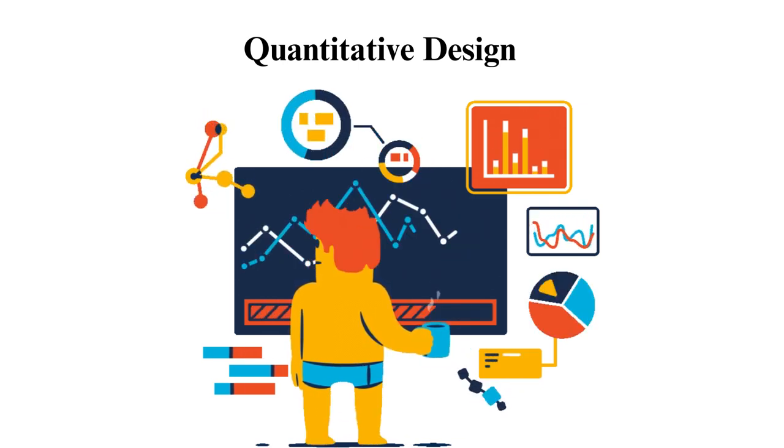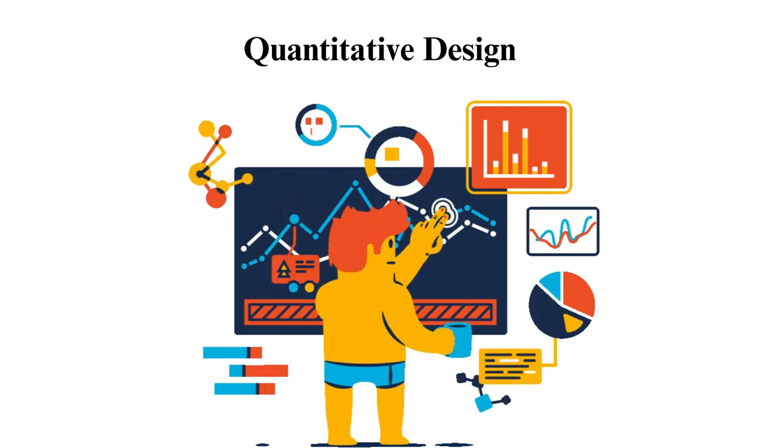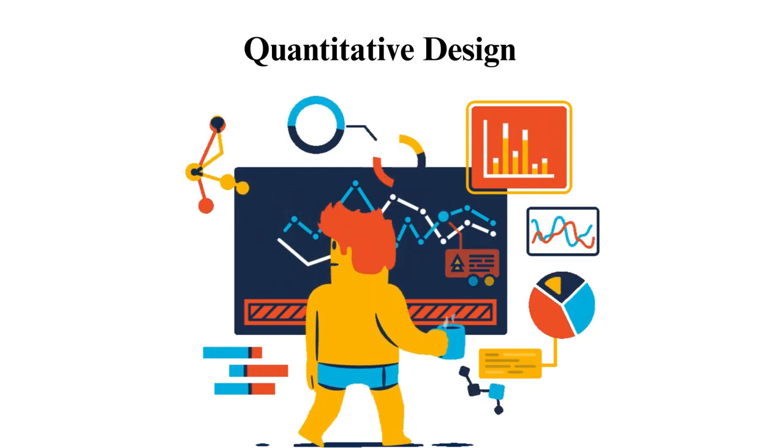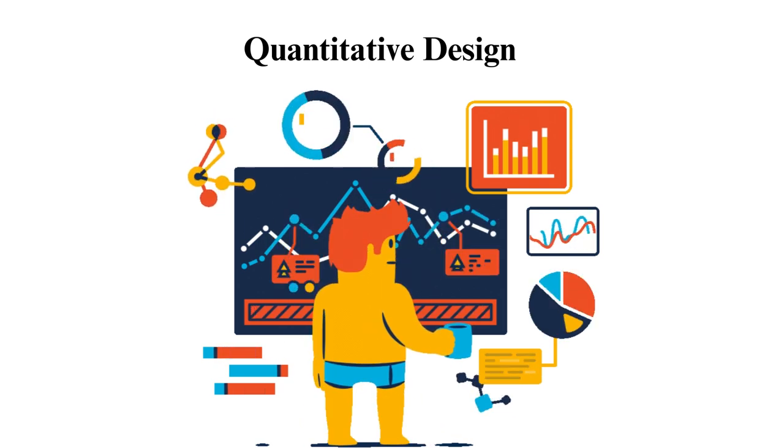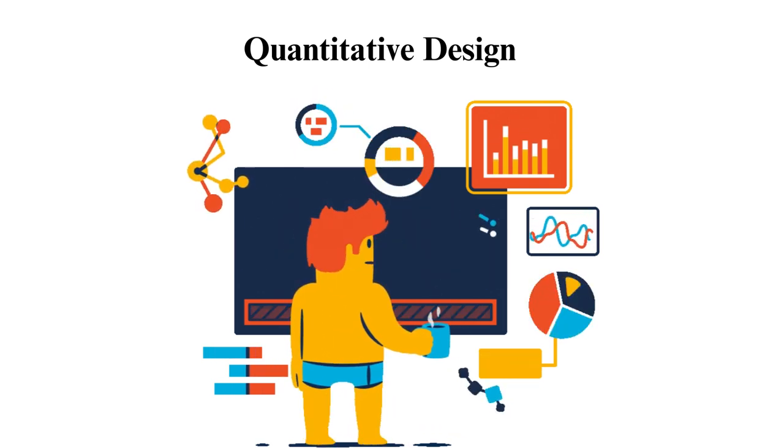1. Experiments. Scientific experiments are studies that are conducted by manipulating a variable. There are three types of experiments: true experimental, quasi-experimental, and non-experimental.